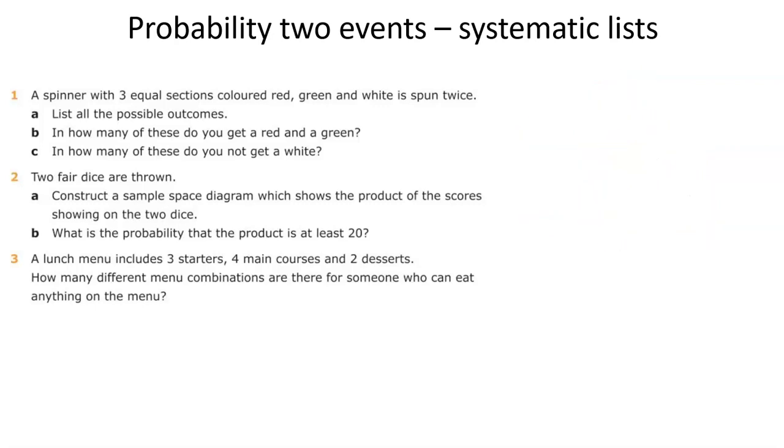There are ways to do probability of two events with multiplication, but that's for another video. This is to go through drawing out systematically all the possible outcomes, where each of those outcomes is equally likely. And then you can look through that big list of every possible outcome, and pick out the things you want over the total number of outcomes. So I'm just going to work through my three examples, and they give a good idea of different ways of doing it.